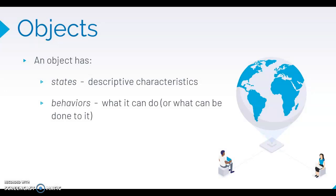An object has states and behaviors. States are the descriptive characteristics of the object and behaviors are the actions or the behaviors of what the object can do or what can be done to it.